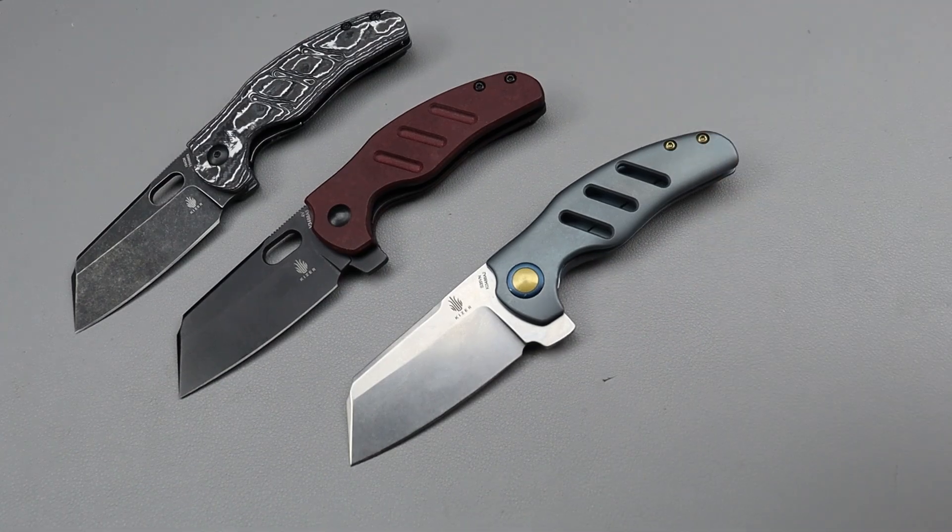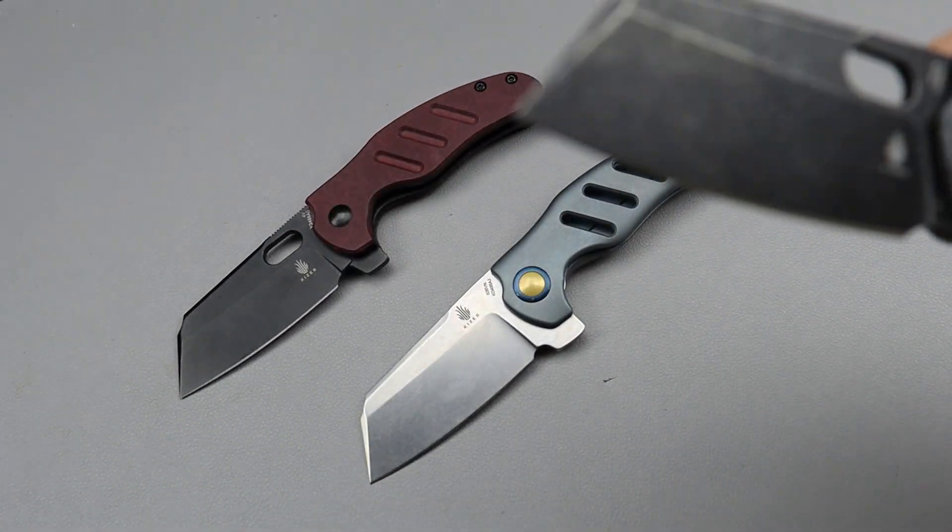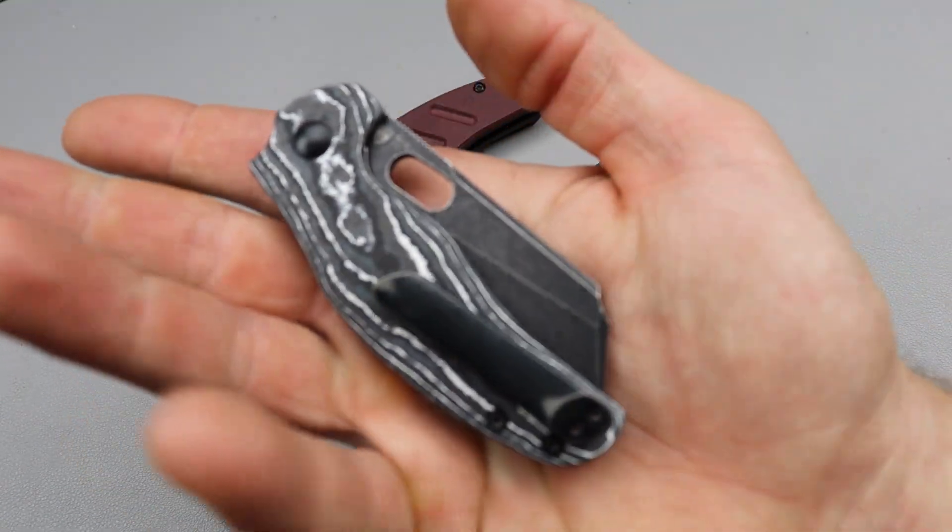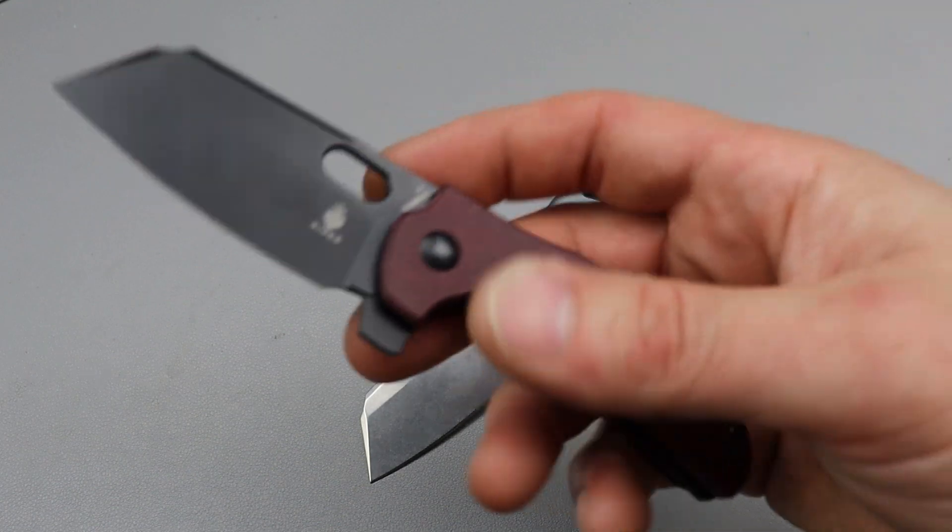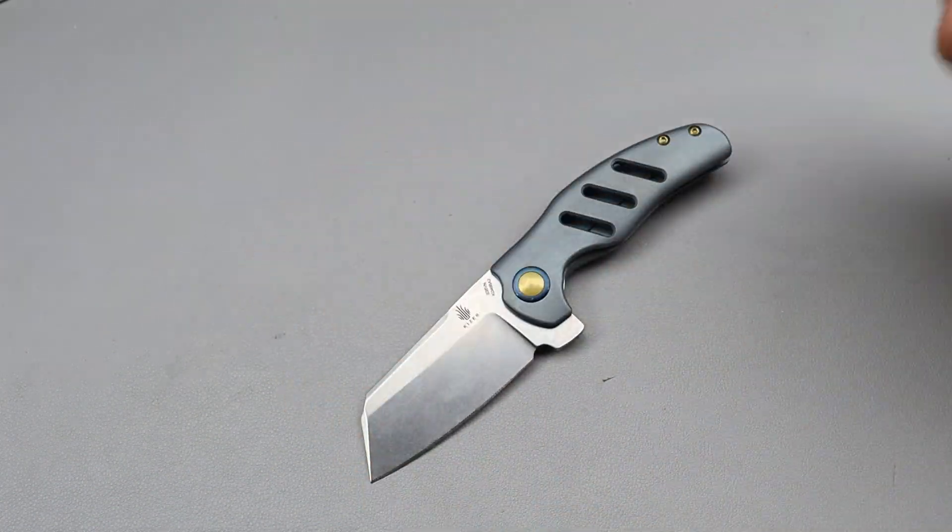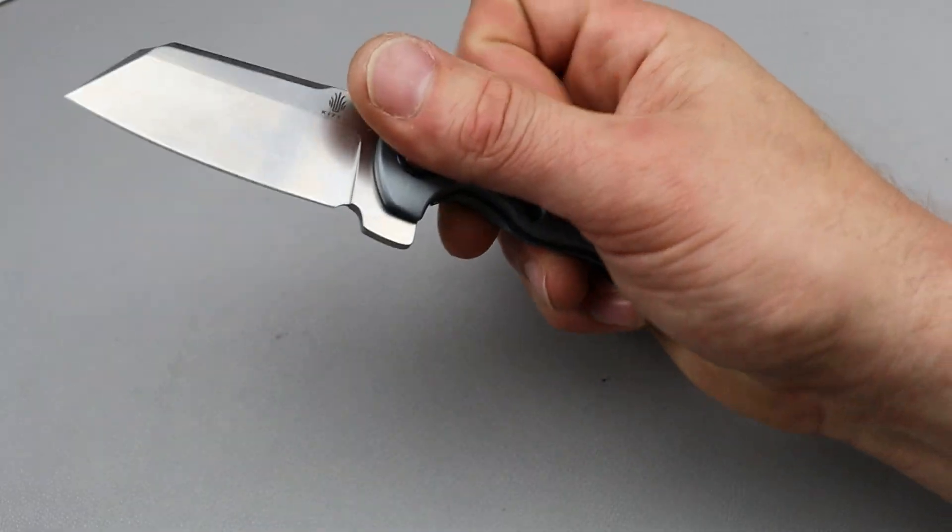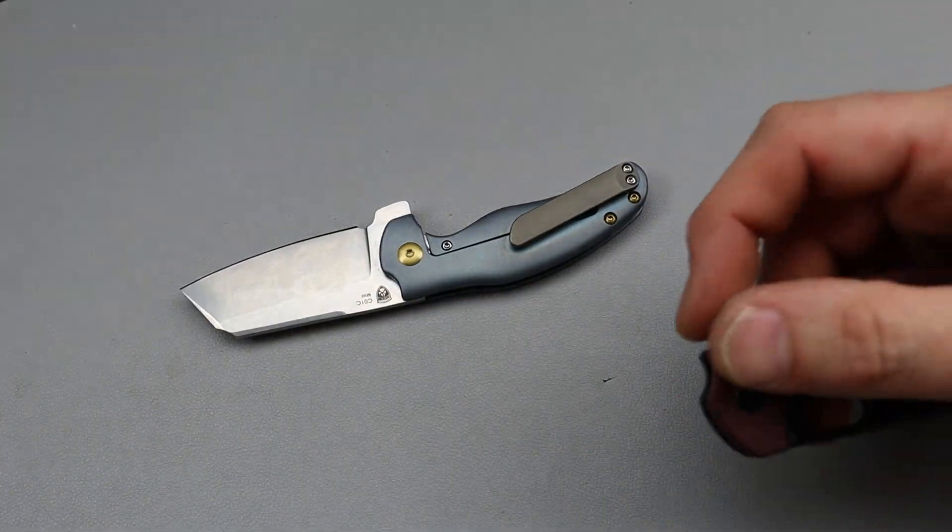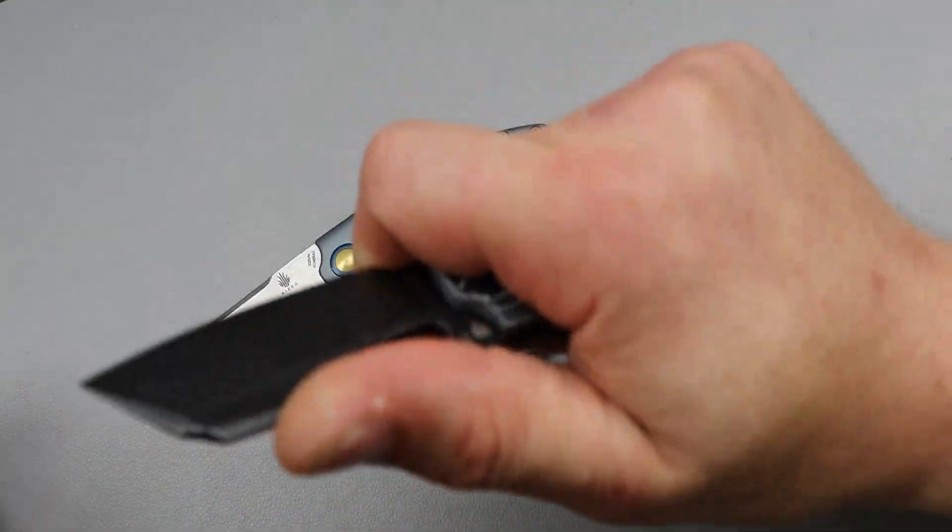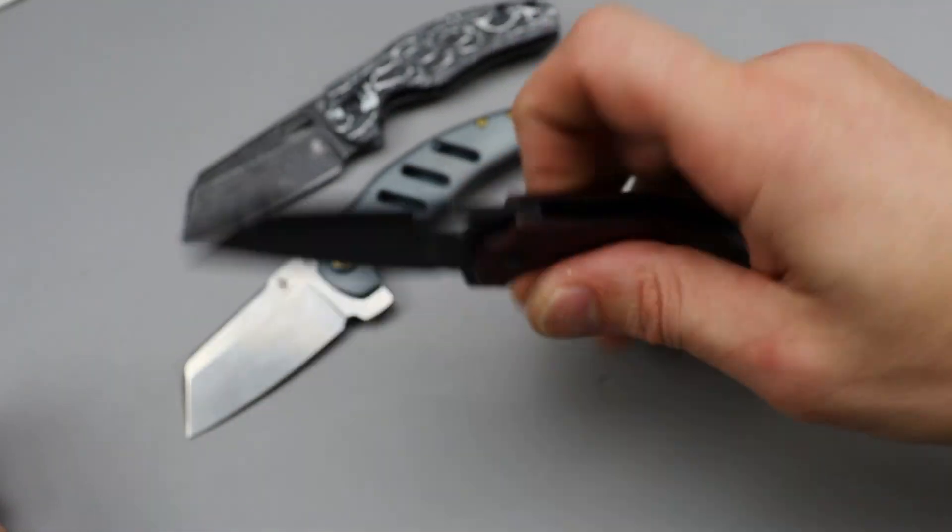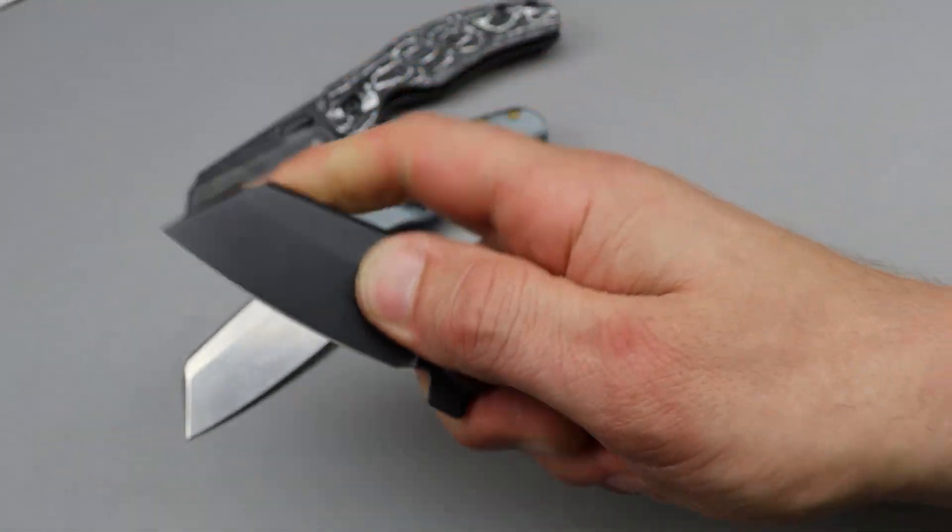This one is in 154CM. This one is in 154CM but I think I swapped the blade on this one. I think this one was originally M390. This one is 4V and this one is S35VN. Basically this is a little cleaver blade. If you don't have the flipper you can get a nice full four finger grip, but when you have the flipper tab it is more of a three and a half finger knife.